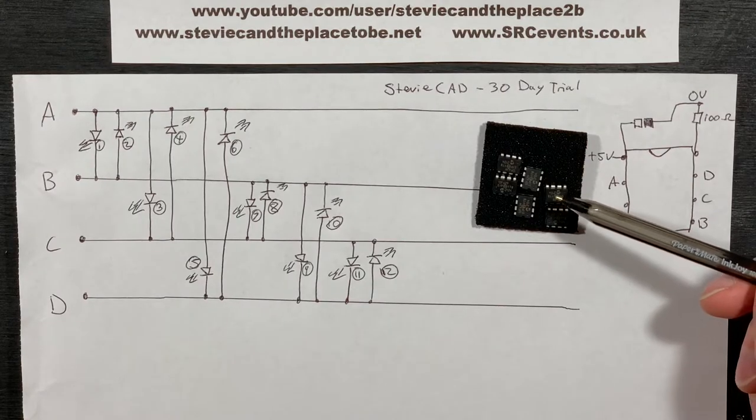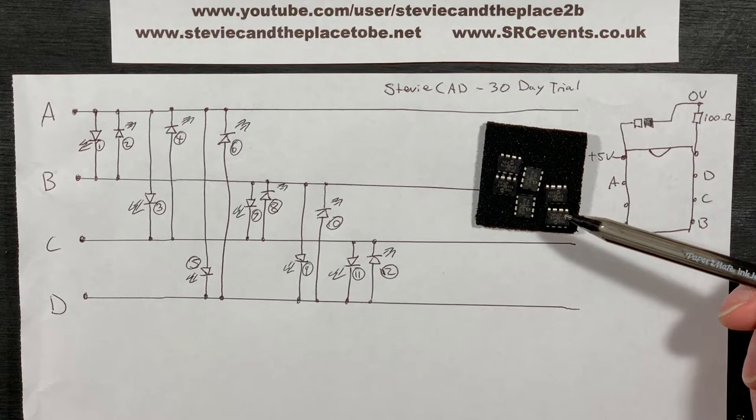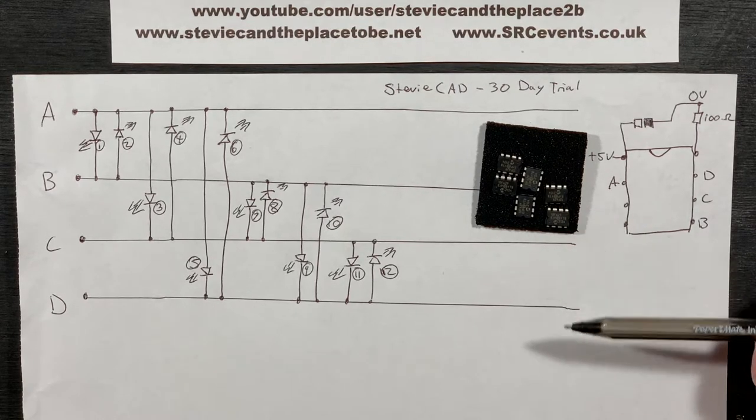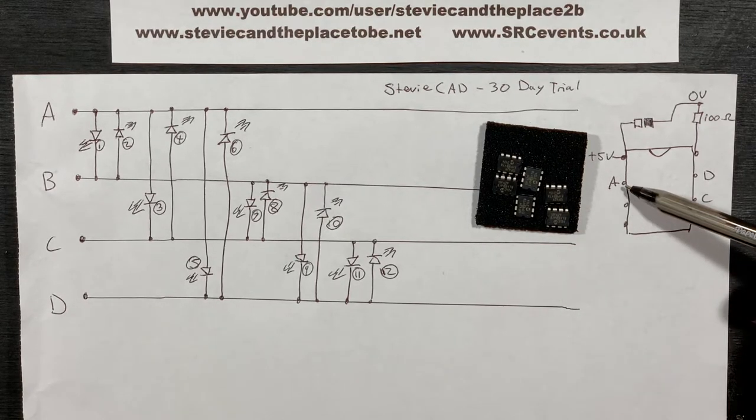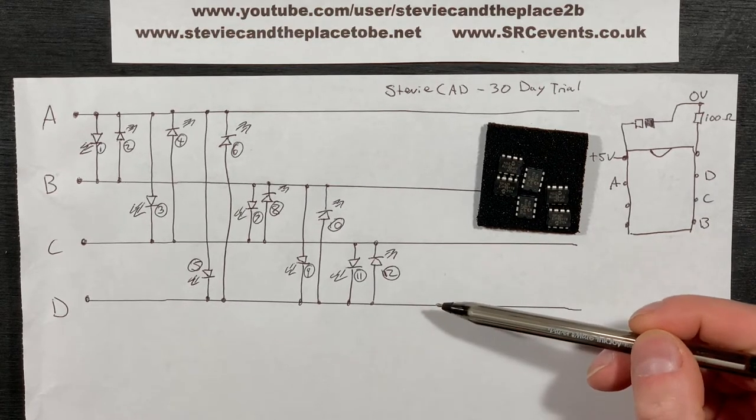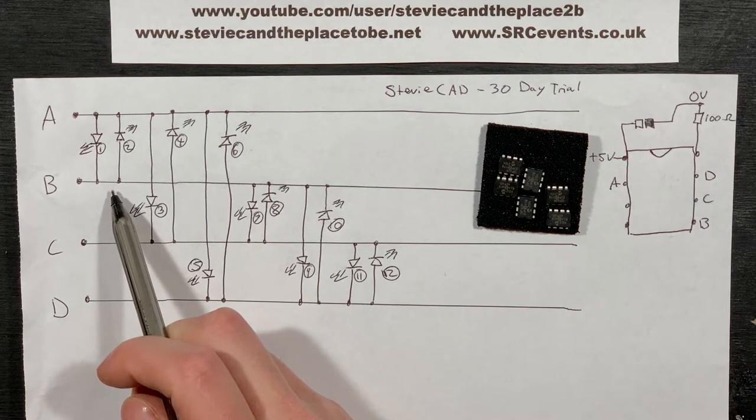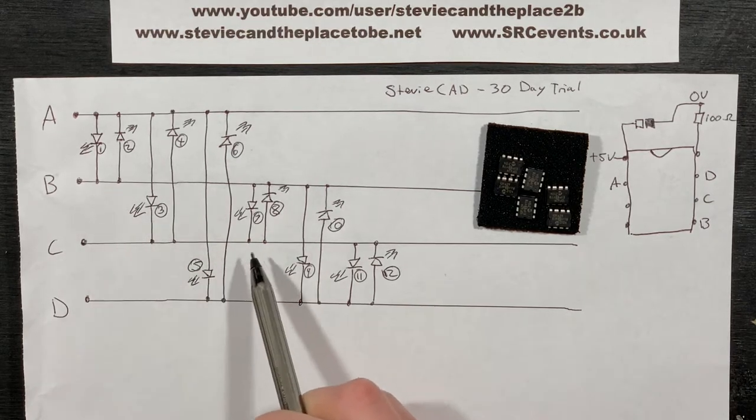So this project uses a PIC12F629 microcontroller, which is using tri-state multiplexing to drive the LEDs. As you can see, we have four output pins A, B, C, and D, but we have 12 LEDs driven from these pins. The LEDs are arranged in inverse parallel pairs connected across all combinations of I-O pins.